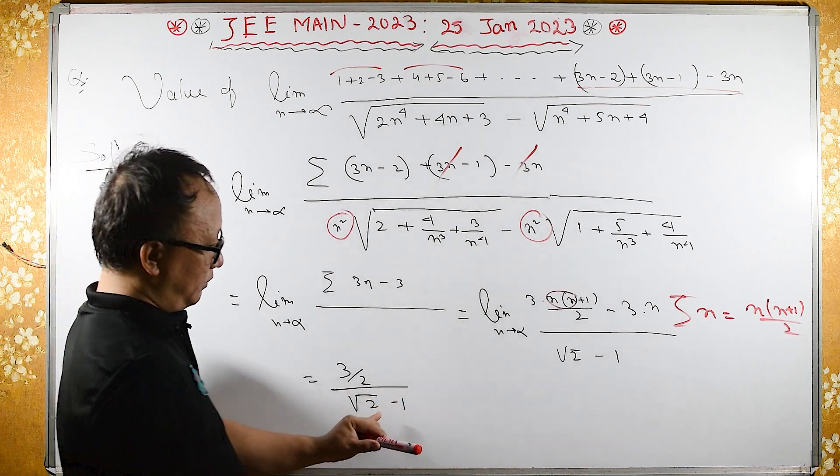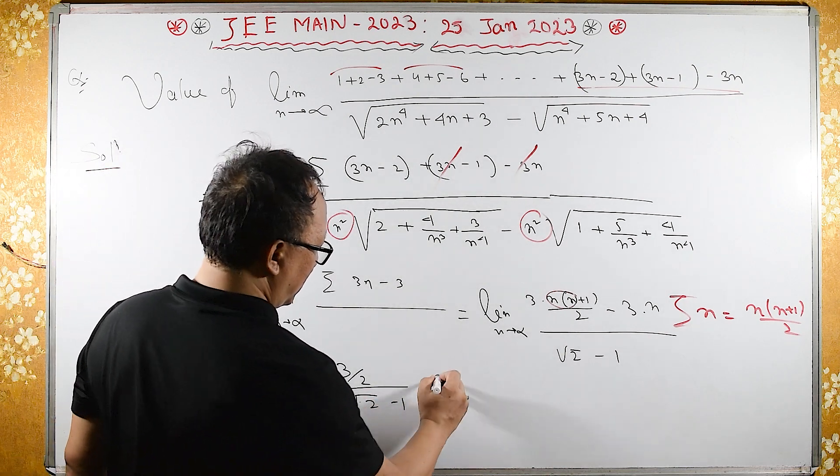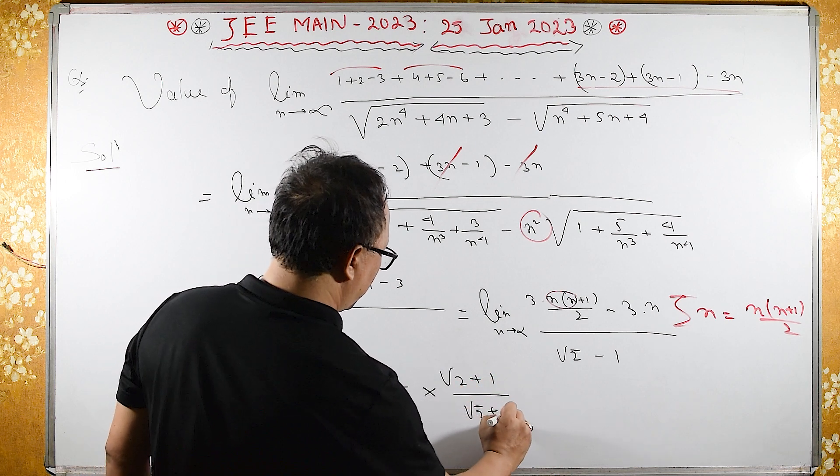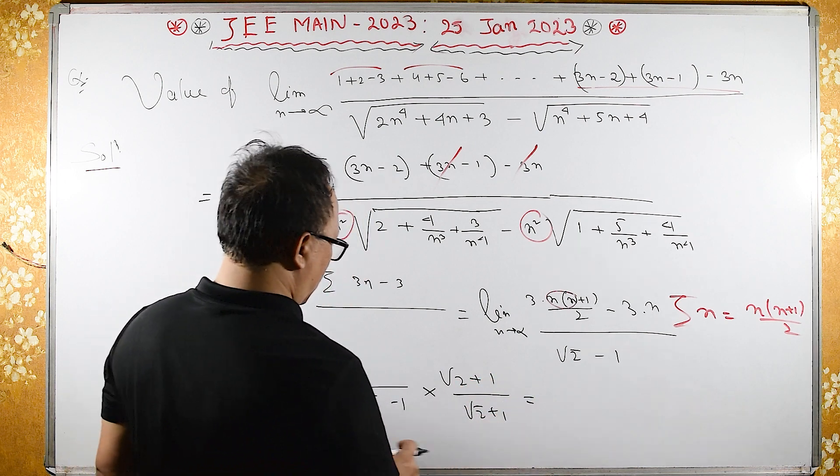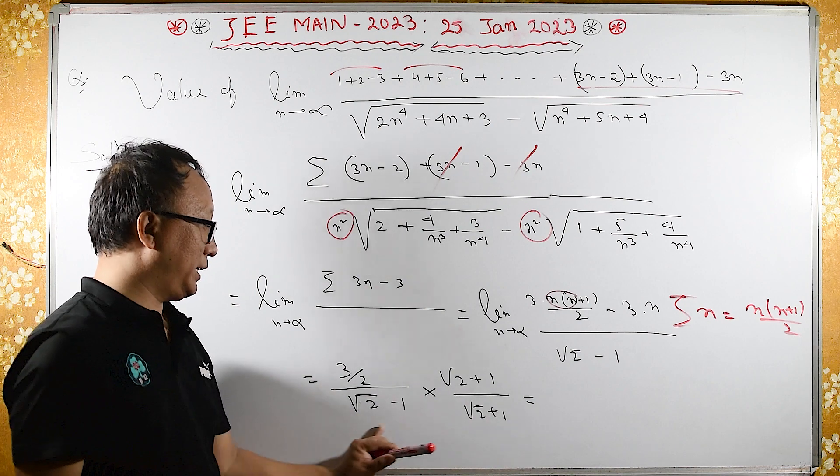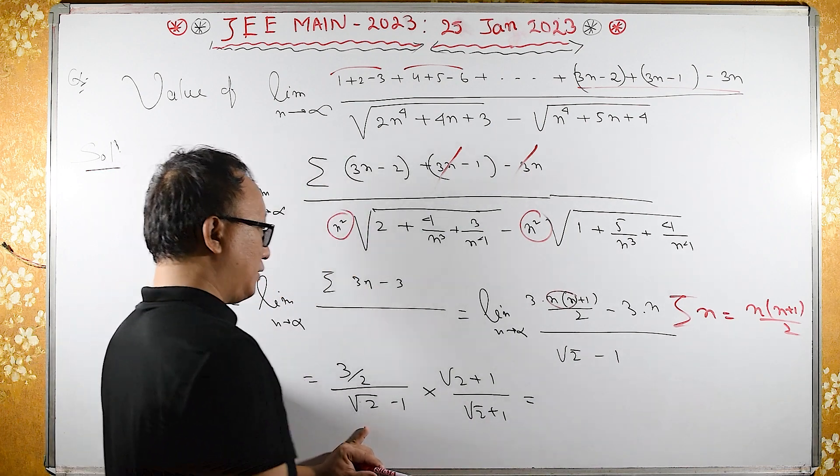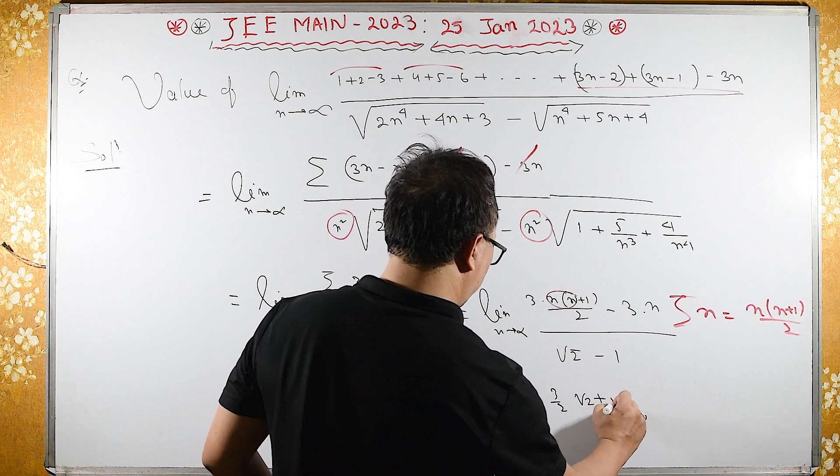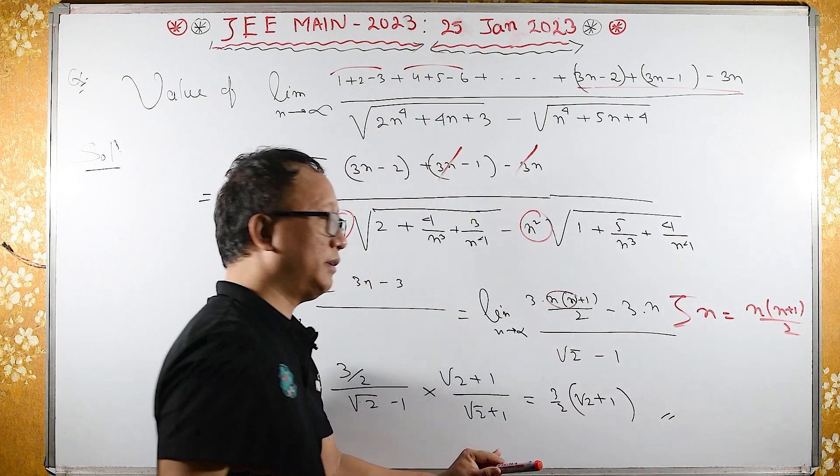You can keep like this or, you can rationalize, here root 2 plus 1 upon root 2 plus 1, the same as, here, a minus b into a plus b is a square minus b square, here 2 minus 1 is 1. So, 3 by 2 square root of 2 plus 1. So, this is that, that answer.